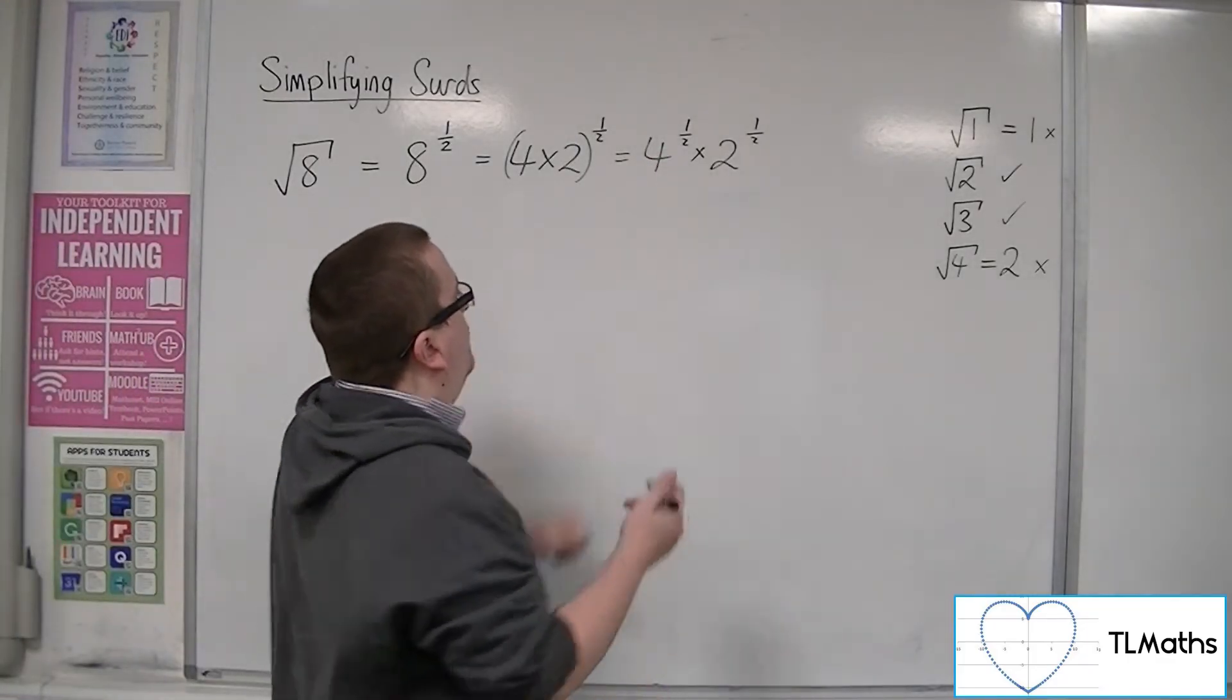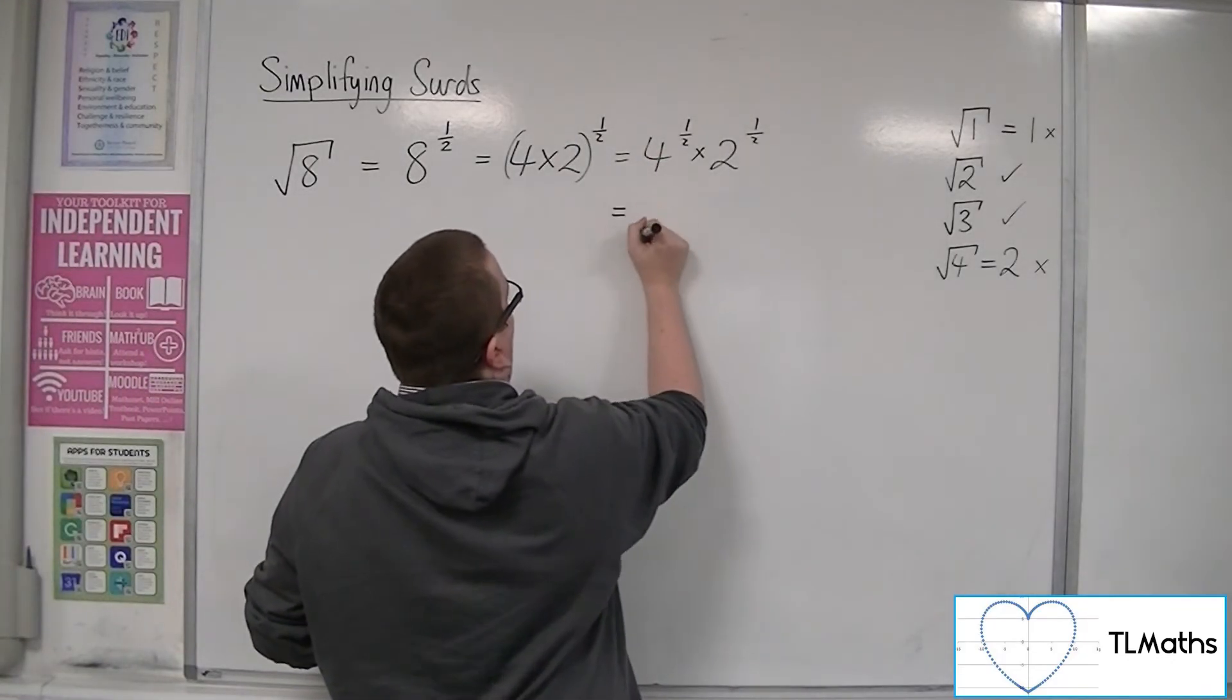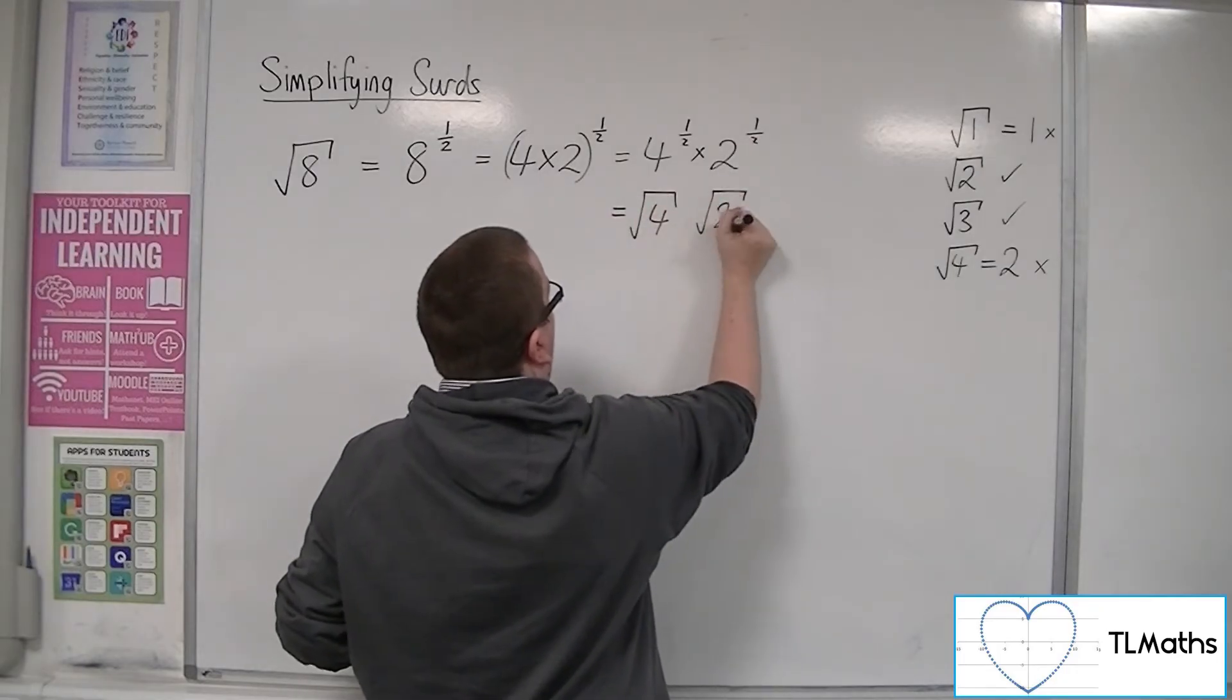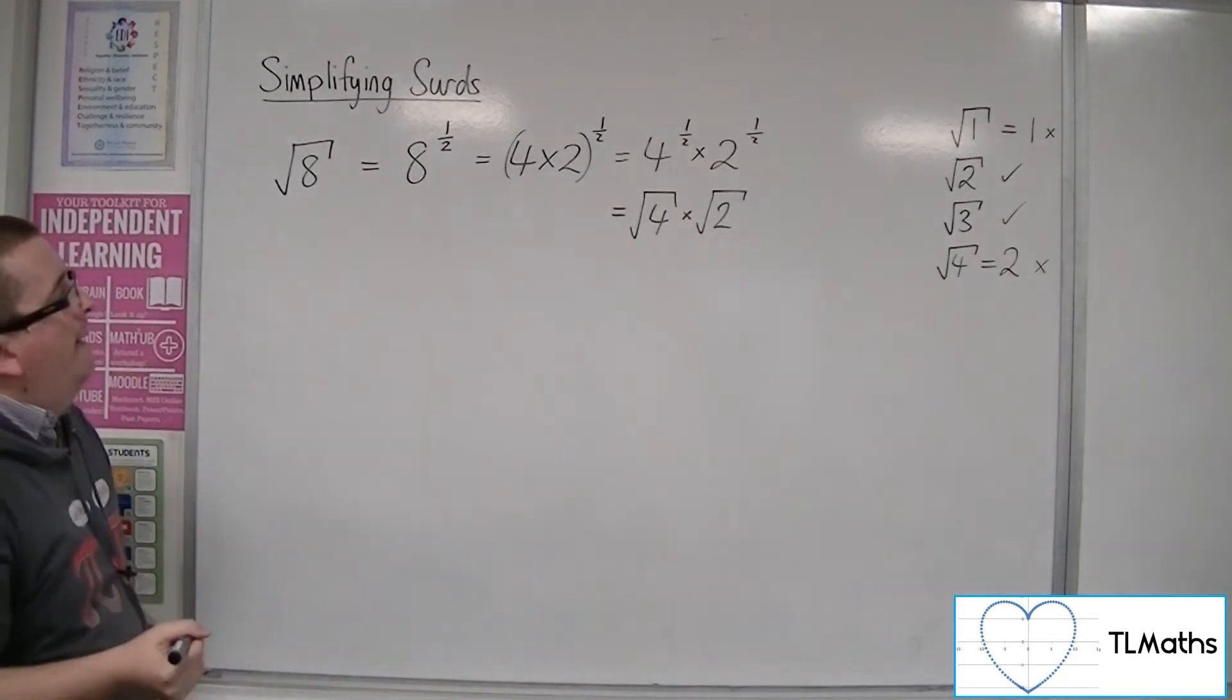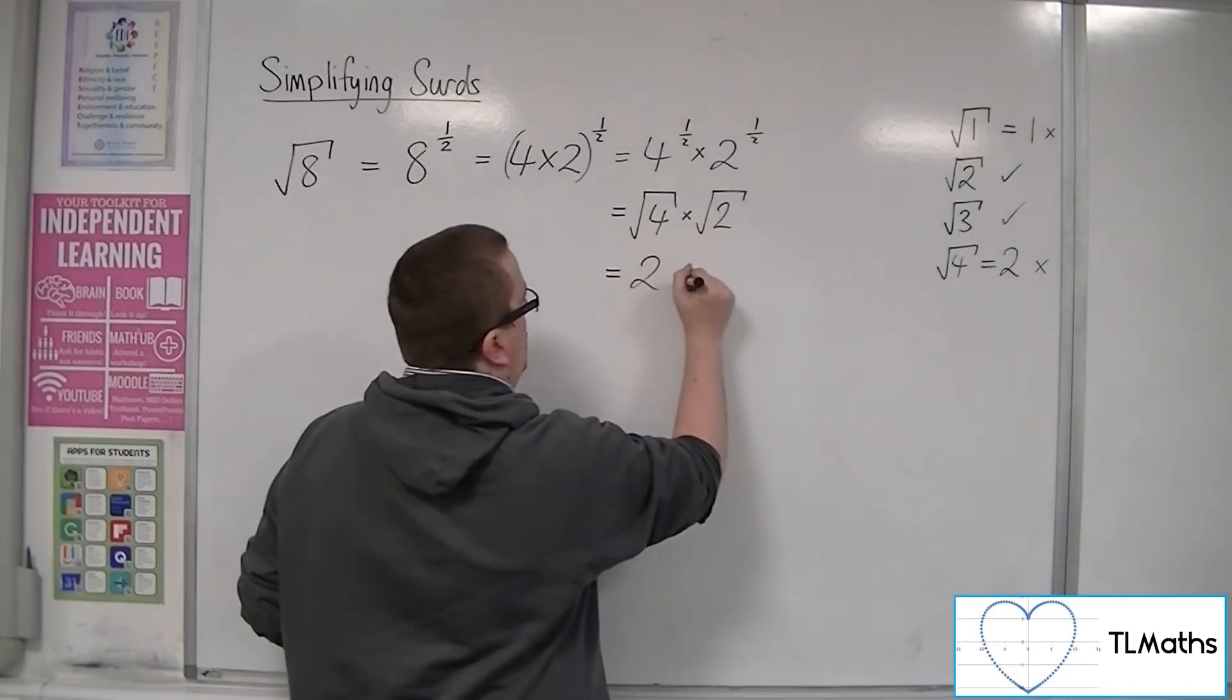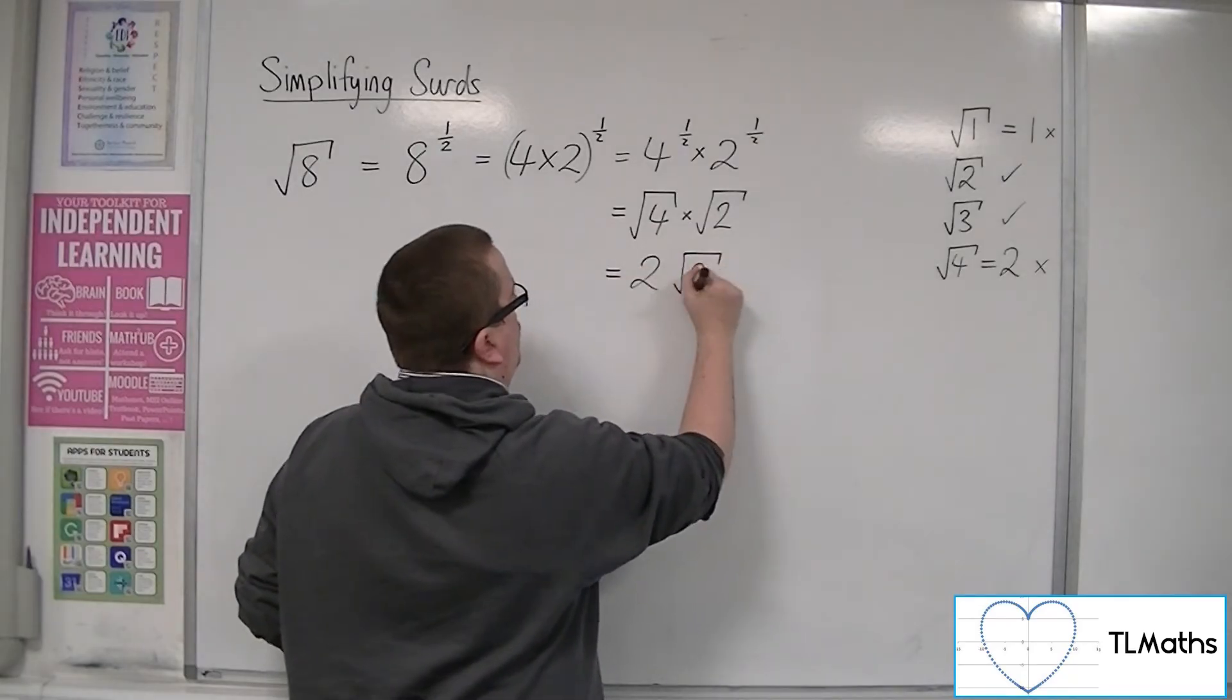And then, 4 to the half, that's square root of 4, isn't it? And that's square root of 2, so we've got the square root of 4 times the square root of 2. And the square root of 4 is just 2, so we could write this as 2 lots of root 2.